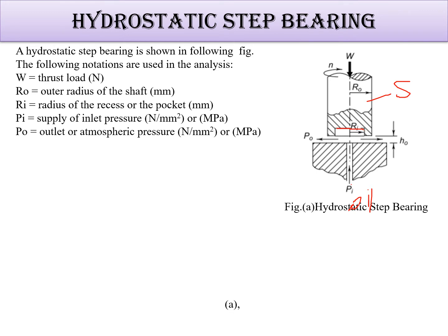Po is the outlet or atmospheric pressure. You can say fluid thickness is what? Fluid film thickness is h0. Flow of the lubricant is Q in mm³ per second.